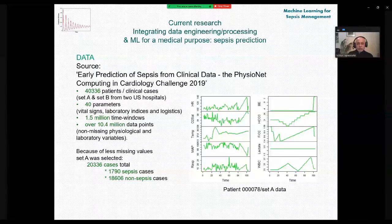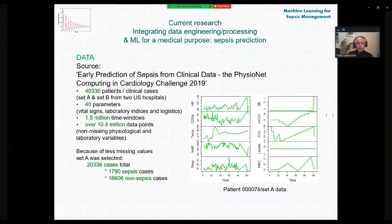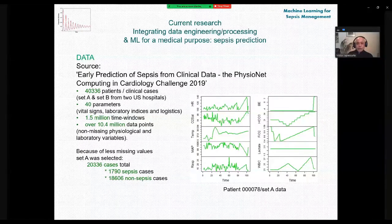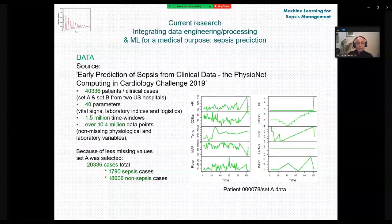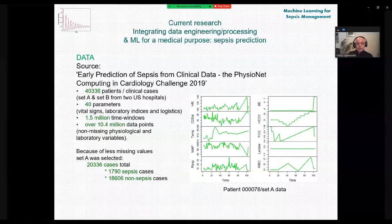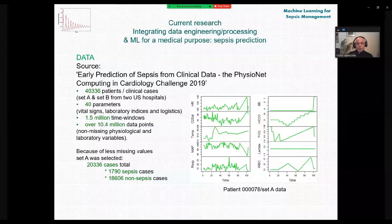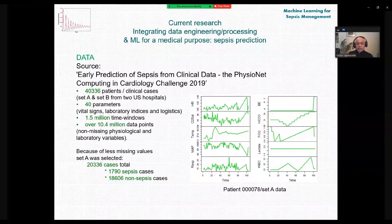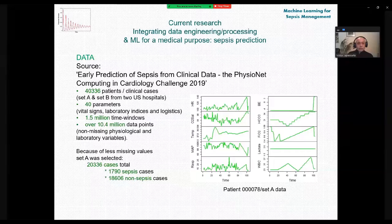Our research uses data coming from 2019 challenge concerning sepsis prediction from clinical data that comprises over 40,336 cases coming from two distinct U.S. hospitals, set A and set B, including 40 parameters, vital signs, laboratory indices and others, 1.5 million time windows and over 10 million data points. And because set A contains less missing values, it was selected for further processing.